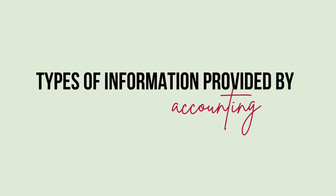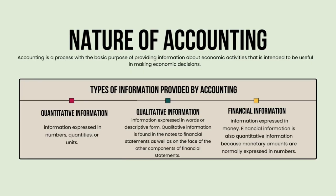What are the types of information provided by accounting? First is quantitative information — information expressed in numbers, quantities, or units. Second is qualitative information — information expressed in words or descriptive form, found in the notes to financial statements. The last is financial information — expressed in money, which is also quantitative because monetary amounts are normally expressed in numbers.